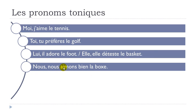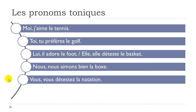NOUS, nous aimons bien la boxe. Note the difference between 'aimer' — I love — and 'aimer bien': when you add 'bien' after 'aimer', it means you like something rather than love it. NOUS, nous aimons bien la boxe. Next: VOUS, vous détestez la natation. 'Natation' comes from 'nager', meaning 'to swim' — natation is the noun form. VOUS, vous détestez la natation.